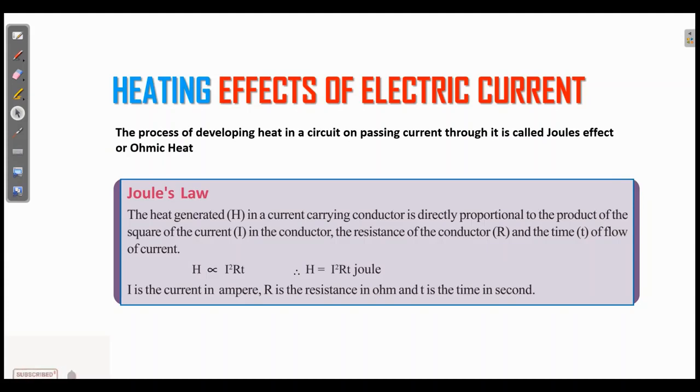That means H, the heat produced, is proportional to I squared, resistance of the conductor R, and the time of flow T. So heat energy H equals I squared into R into T. That is Joule's law. It is very important to define Joule's law.